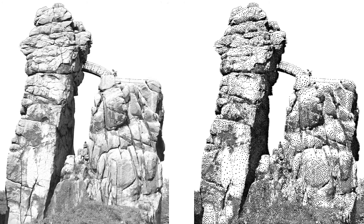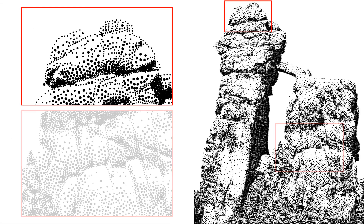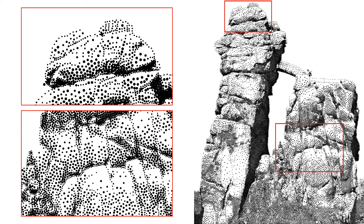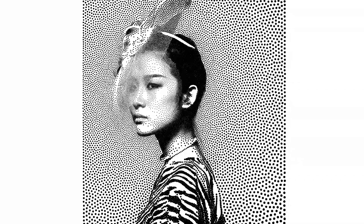A particularly nice property of LBG stippling is that splitting and merging operations can be adapted to image properties like variance. This way, regions with high contrast can be represented by more and smaller stipples. The size of the points can also be related to their position, and the system adapts them to such different point sizes.